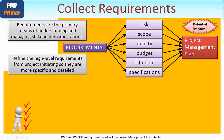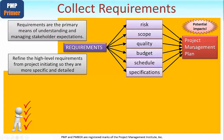You start with the high-level requirements normally stated within the project charter — created during the project initiating process group — and you need to take those high-level requirements and refine them further so they are more specific and detailed. Once the project management plan is approved, every one of the requirements will have some potential impact on its contents in terms of risk, scope, quality, budget, schedule, and specifications.